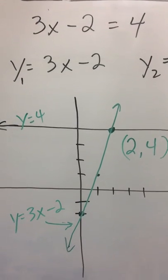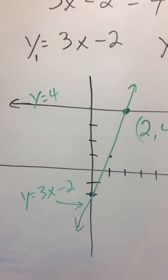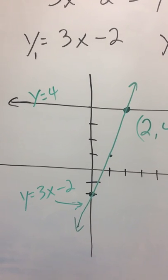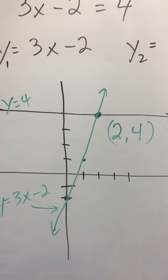And then for the 3x - 2, I would start on -2, and my slope is 3, so I would go up 3 over 1, up 3 over 1. If you take a look at that, it goes through the point (2, 4).